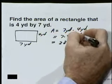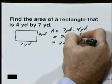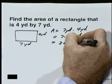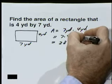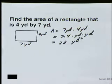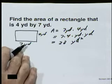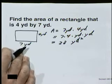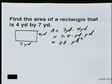Yards times yards — we usually write that with an exponent as yards squared. We read that as square yards. So the area of this rectangle is 28 square yards.